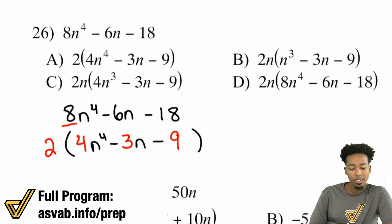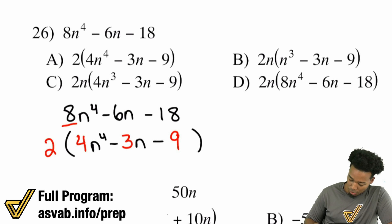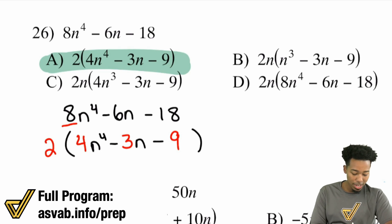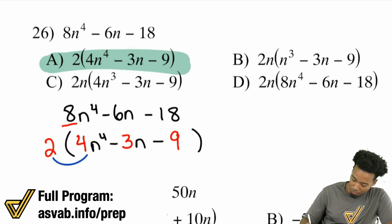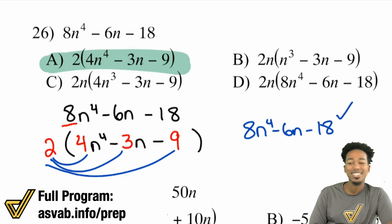Right there. So there's your answer. You couldn't factor out any variables — you can only factor out regular old numbers, because they're all divisible by 2. You can pull the 2 out and boom, there you go — making our answer A. So I hope this makes sense. You can always try things out in terms of distributing to check your work. We can absolutely do that. 2 times 4n to the 4th is 8n to the 4th. 2 times negative 3n is negative 6n. 2 times negative 9, negative 18. Right back to the very beginning and you're good.